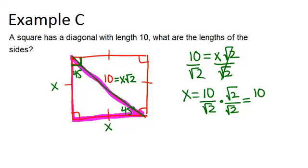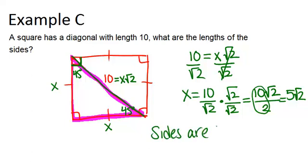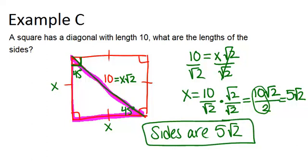Multiplying across you get 10 root 2 over 2 and then you can simplify the 10 divided by 2 is 5 so it's 5 root 2. Your final answer is the side lengths are all 5 root 2.